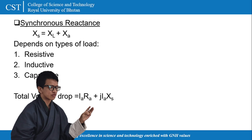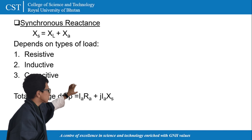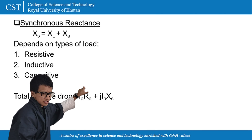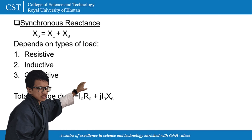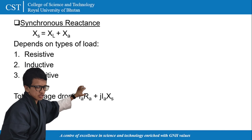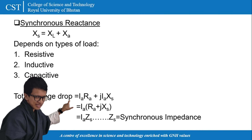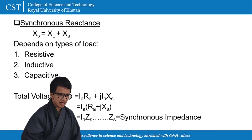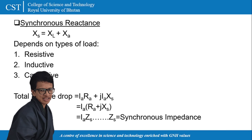When you put in a load, the inductive voltage drop will be the armature drop plus the load drop. The load drop is given by j times XS, that is the synchronous reactance. Upon simplifying the formula, you will get it as IAZS, where IAZS is the sum of armature reactance, resistance, and synchronous reactance.